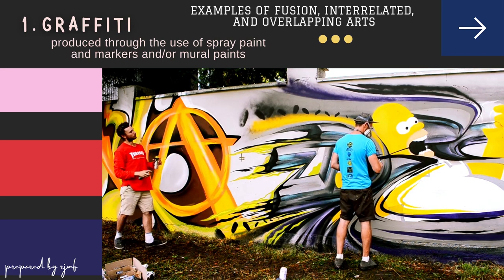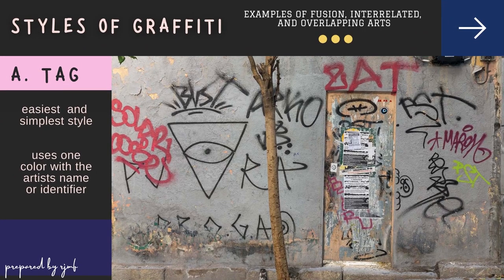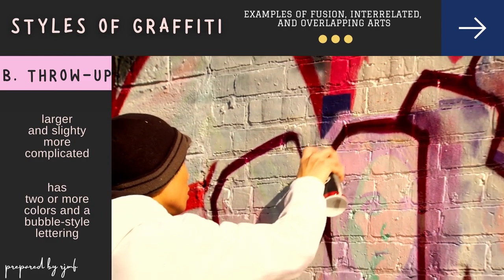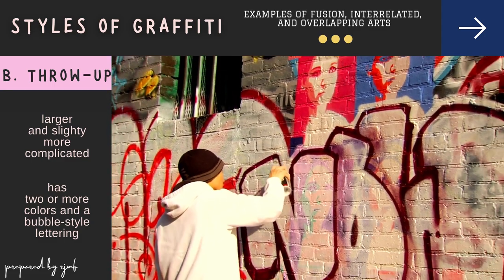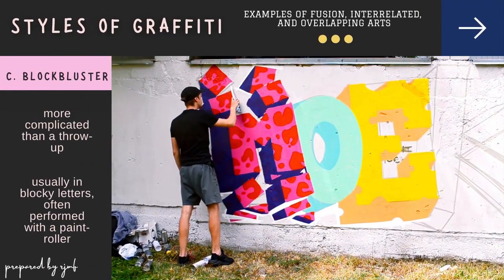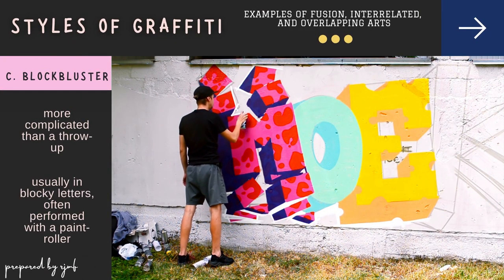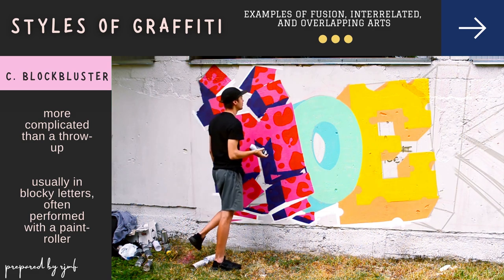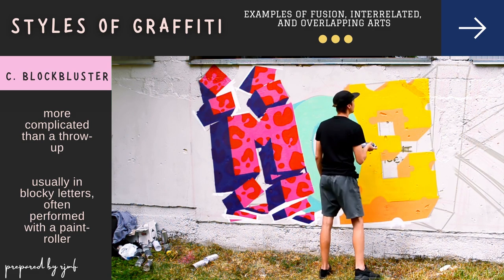What are the styles of graffiti? Tag — tagging is the easiest and simplest style of graffiti. It only uses one color with the artist's name or identifier. This style originally evolved from the term 'old school' when graffiti art began to develop in the 1970s and 1980s. A throw up is larger and slightly more complicated than a graffiti tag. It usually has two or more colors and a bubble style lettering. A blockbuster is more complicated than a throw up. It is usually in blocky letters, often performed with a paint roller, executed simply to cover a large area in a short span of time in order to stop other graffiti sprayers from painting on the same wall.